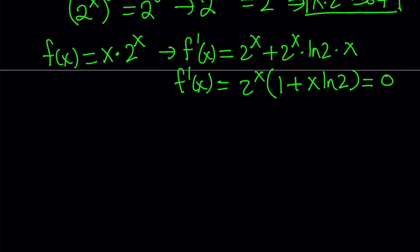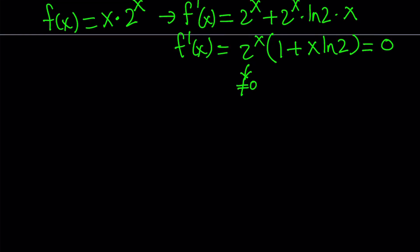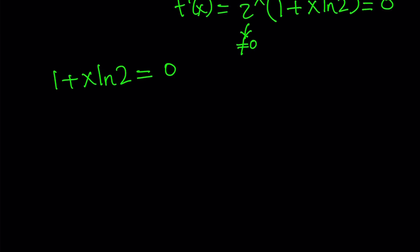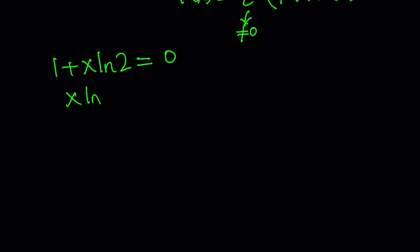That gives us, obviously, 2^x can never be 0. For real x values, this is always greater than 0. So we're going to consider 1 + x·ln(2) = 0. This indicates x·ln(2) = -1, which means x = -1/ln(2), which is approximately -1.44.